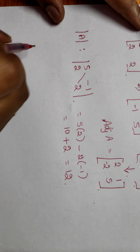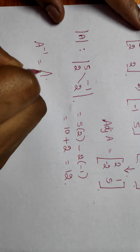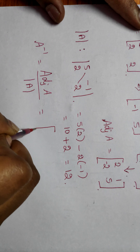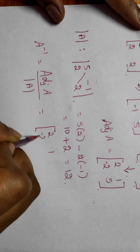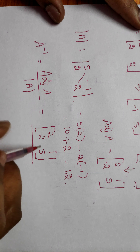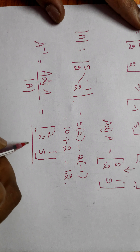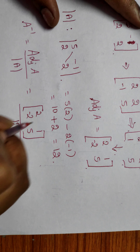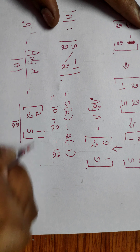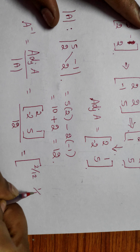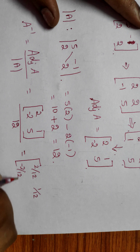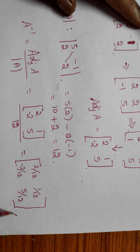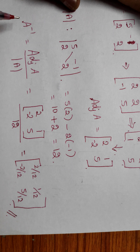The formula is: A inverse equals adjoint of A divided by determinant of A. The adjoint of A is [2, 1; -2, 5] and the determinant value is 12. So we divide each element by 12: 2/12, 1/12, -2/12, 5/12. This is the inverse of matrix A.